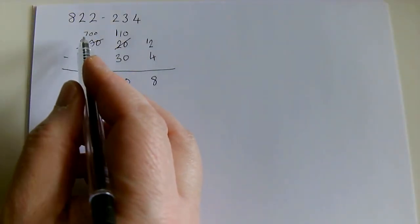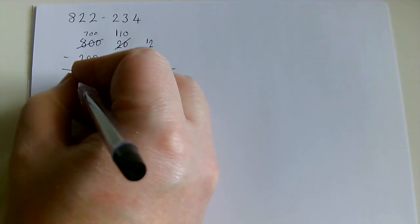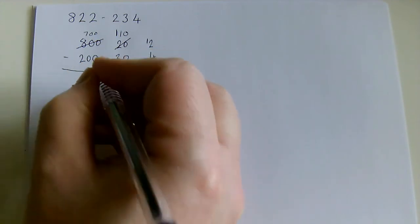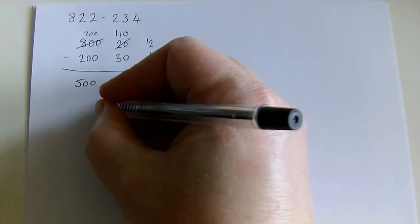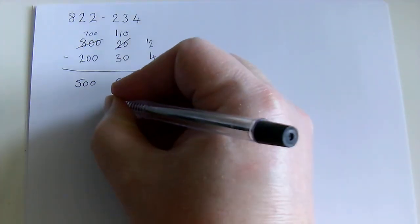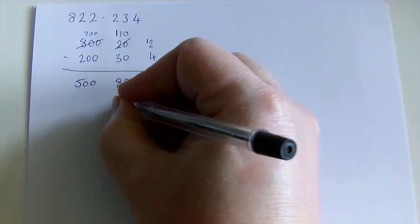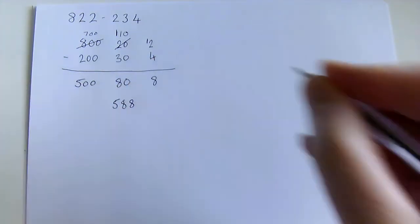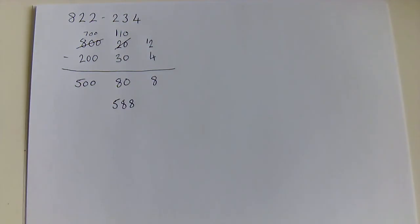Finally the hundreds. 700 subtract 200 is 500. We combine that. We've got 500 and 80 and 8 is our final answer. Let's move on.